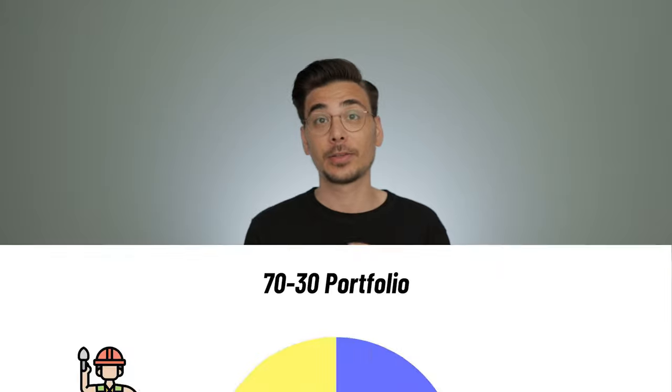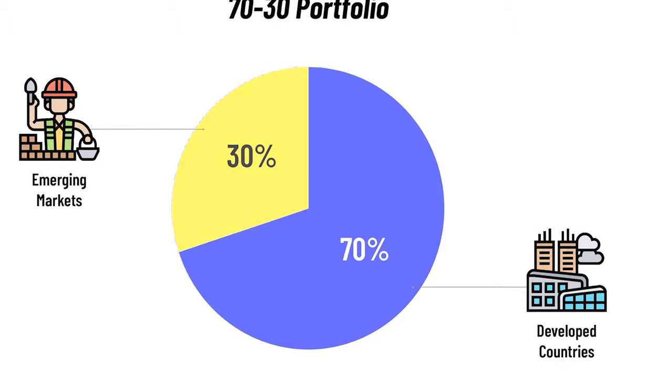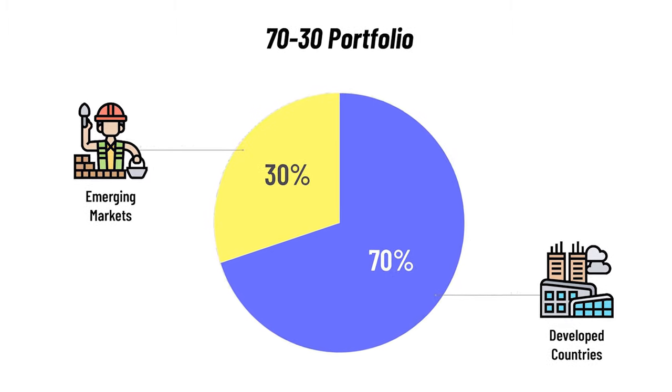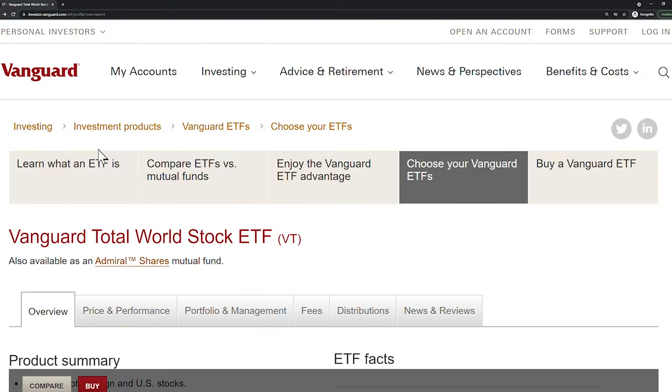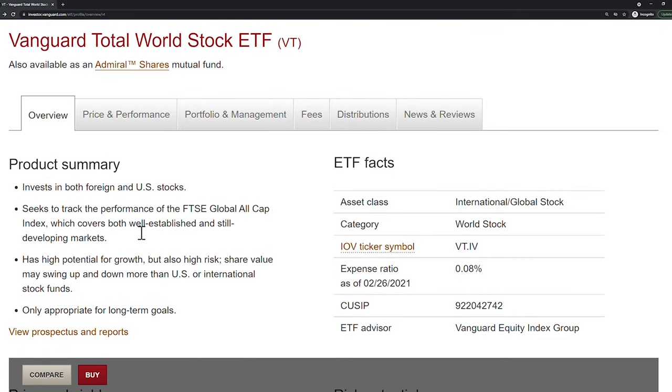Global diversification has very little downsides but a lot of benefits, like minimizing your drawdowns. The most well-known strategy is the 70-30 portfolio, where 70% of your money is invested in developed countries and 30% in emerging markets — which also roughly represents the global GDP distribution. Another simpler and cheaper way is to pick a global ETF like the Vanguard Total World Stock Index Fund ETF, which gives you access to 47 countries in both developed and emerging markets.